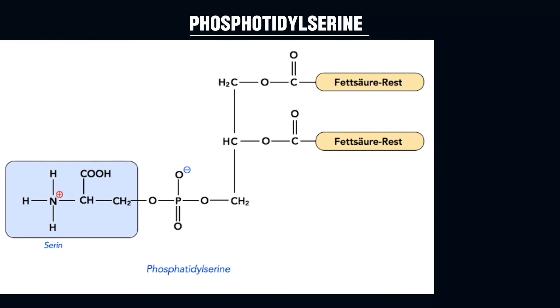The third type of glycerophospholipid is phosphatidylserine, where the glycerol is attached to two fatty acids and the phosphate group is attached to serine. It occurs in about 10 percent of phospholipids in mammals and is a component of biological membranes. It plays a key role in cell signaling, specifically in programmed cell death known as apoptosis.